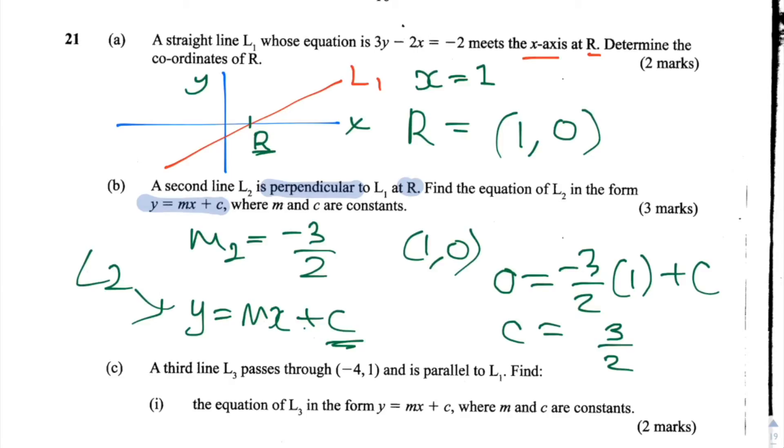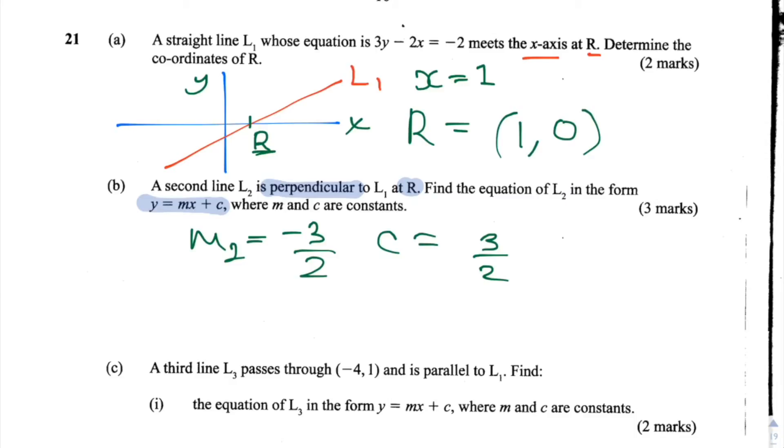So let's write the equation for the line L2. The equation for the line L2 in the form y equals mx plus c is y equals minus 3 over 2 x plus 3 over 2.